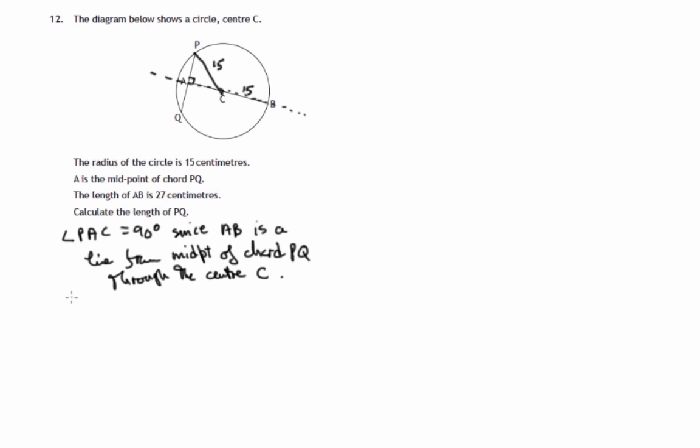We're also told that AB is 27. Now to get this side AC, it's the whole of AB minus BC. It's the whole of this length AB, which we know to be 27, minus this radius, which we know to be 15. So we've got a length of 12 centimetres for AC.